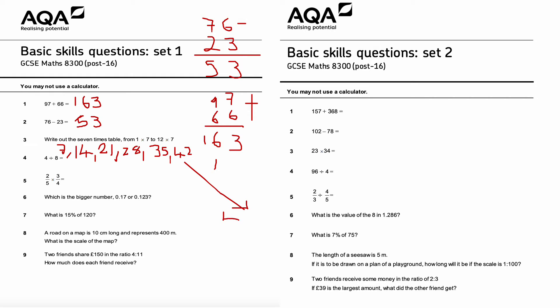Continuing: 7 times 7 is 49, 8 times 7 is 56, 9 times 7 is 63. Oh sorry, 10 times 7 is 70, not 72 — apologies for that. 11 times 7 is 77, and 12 times 7 is 84. So the seven times table is: 7, 14, 21, 28, 35, 42, 49, 56, 63, 70, 77, and 84.